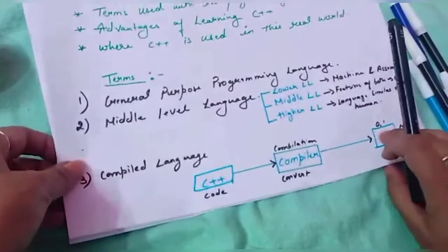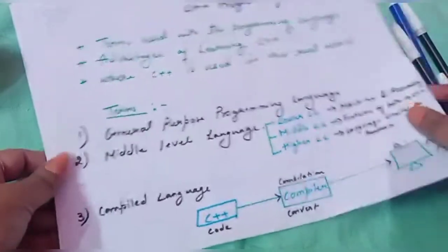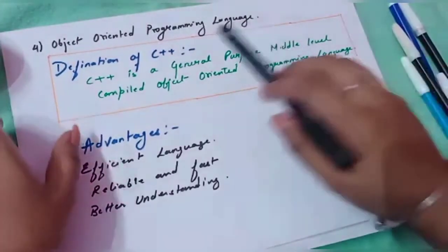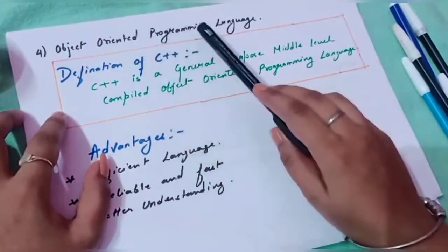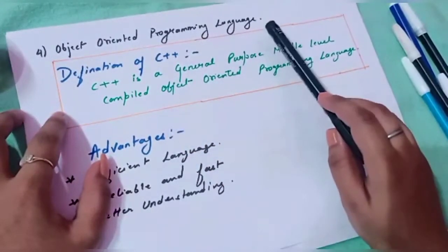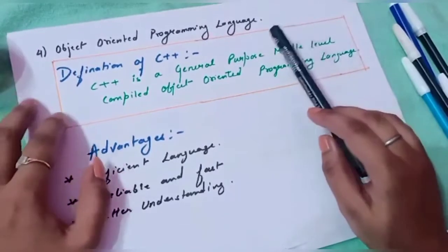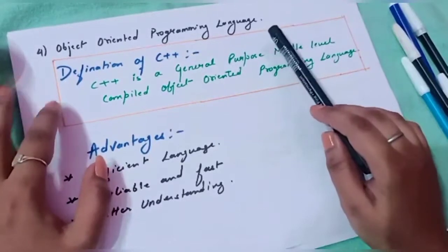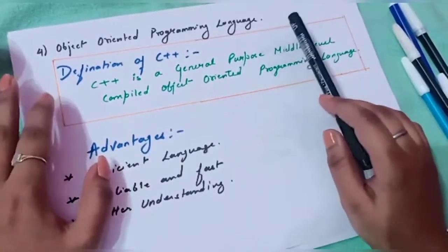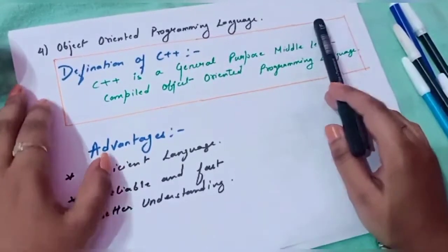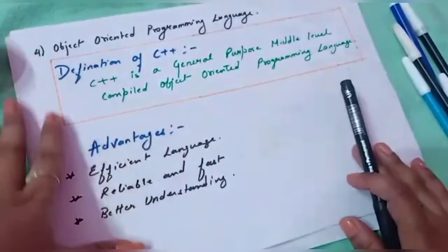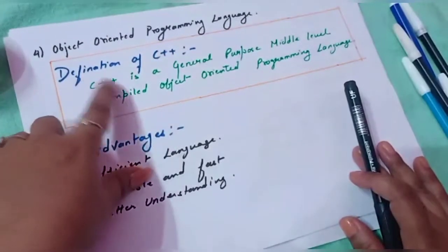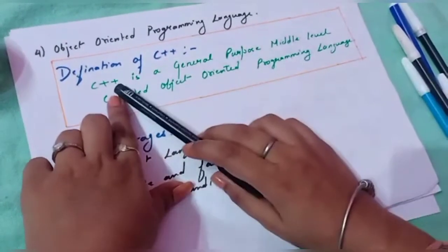The fourth point is that C++ is an object-oriented programming language, because it uses the concepts and approach of object-oriented programming. Now since we have discussed all four terms, we will create a definition for C++. Here is a very easy definition: